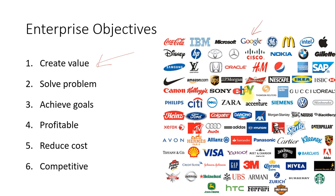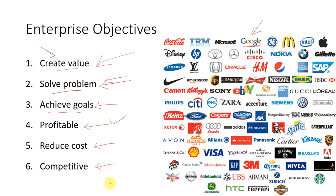For example, Google has a platform through which you can come up with solutions to your problems. Similarly, McDonald's, Apple, and other companies always focus on creating value and solving user problems. Their aim is to create value, solve problems, achieve their goals, make profit, reduce costs, break competition, and sustain in the competitive market. These are key objectives for any company.